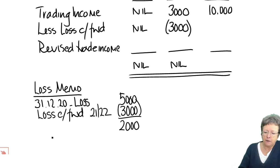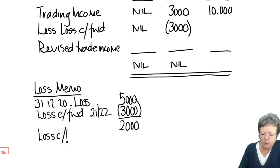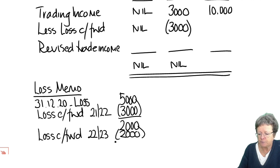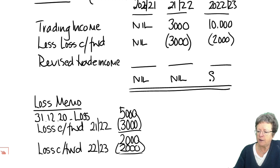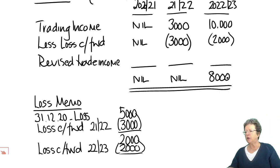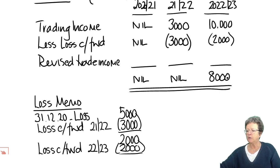We still have £2,000 that we can carry forward, and because the loss can be carried forward indefinitely, we're going to use that in full in the next year — meaning that £8,000 is the figure that needs to go into the computation. You can see how that works — it's nice and easy. Just carry it forward and make sure that you show all your workings.